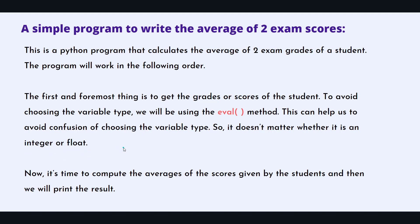Don't worry about integer and float types — just use eval method. I'm going to use eval while taking inputs from the user and implement it in this exercise. I know this exercise is pretty simple: average of two numbers and print. But for beginners, we have to follow some rules. You will also know about variables, eval method, and a lot of new things by doing this exercise.